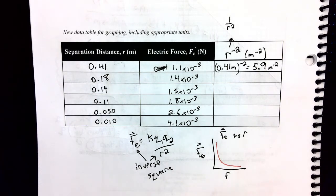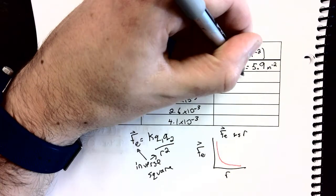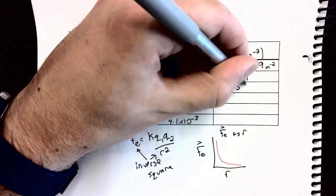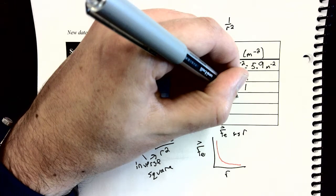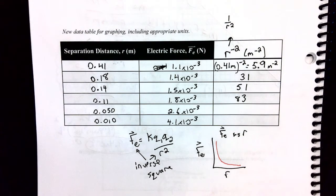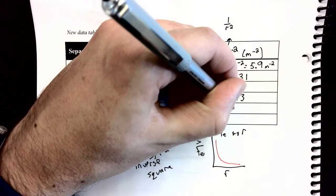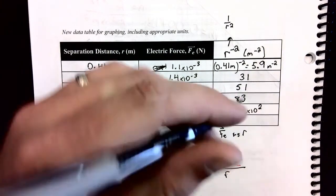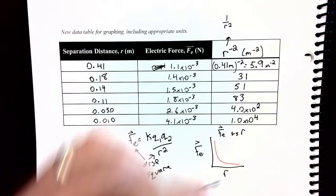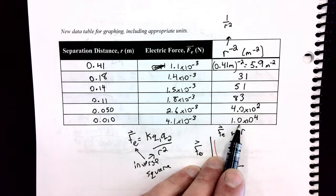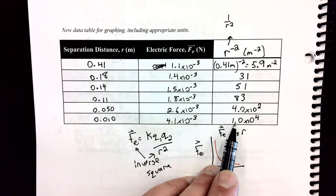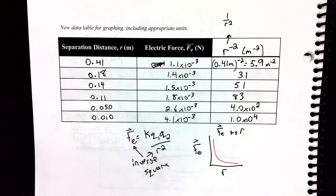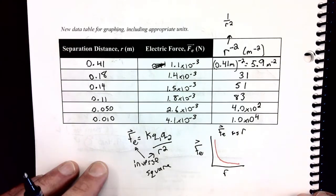And that'll be meters to the negative 2 for its unit. Now I'll quickly go through and just do the rest. I'm keeping my sig digs consistent as I go. Your data very likely will look different from mine because we didn't collect the same data, and that's totally fine. And I had a couple of quite large r to the negative 2 values at the bottom, so I used scientific notation. This one was 400, my bottom one was 10,000. So we got very close together.